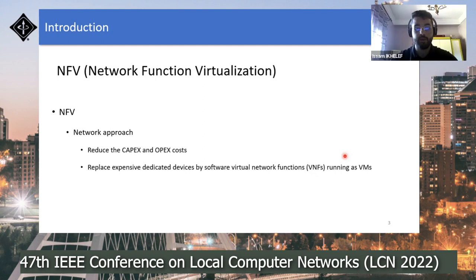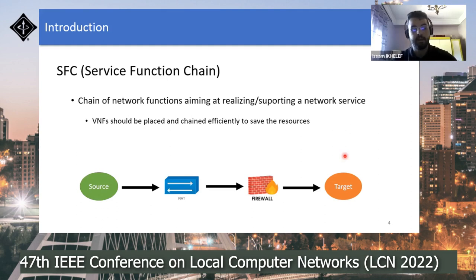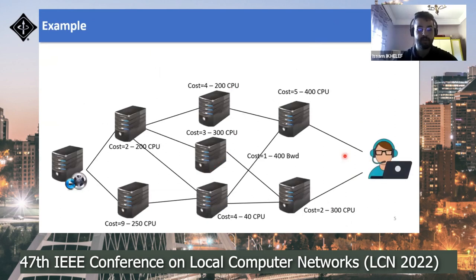It will be possible to build network services by simple expression of need. A network service will be built by placing and chaining network functions — this network function chain forms a Service Function Chain, or SFC. This chain of network functions aims at realizing and supporting a network service. Given the limited capacities of servers, their locations, different costs for servers and links, we must determine the best path that traverses the servers on which we run the VNFs. The path also determines the VNF chaining and thus the flow route.